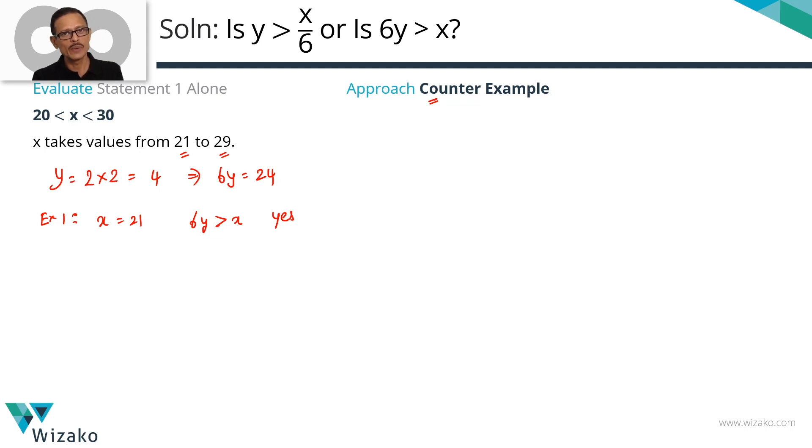X can take values from 21 to 29. So X can very well be, I'm going to take a counter example, X could very well be 25 or 26. In this case, 6Y which is 24 is not greater than X. So the answer to this instance is no. So sometimes you get yes, sometimes you get no. A counter example exists which means statement 1 is not sufficient.